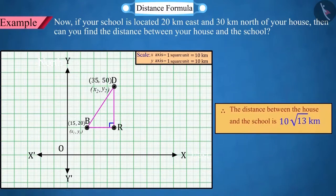So, the distance between the house and the school is 10 square root 13 kilometers.